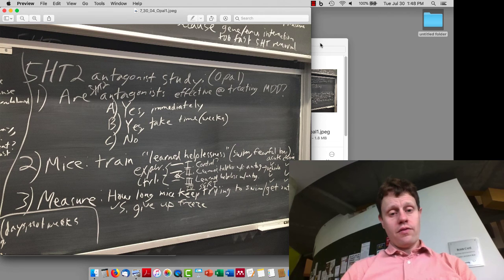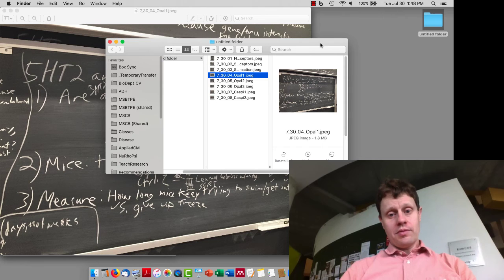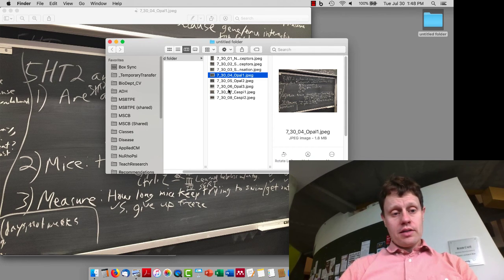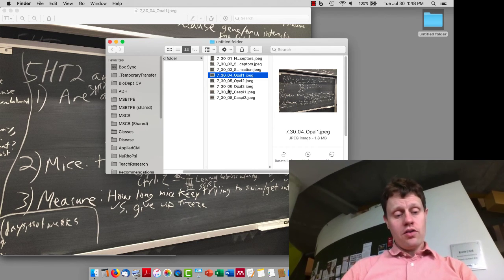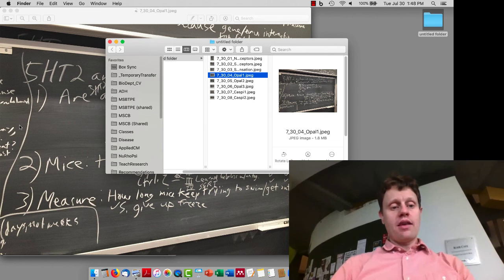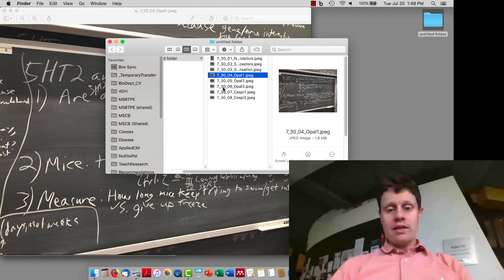What they found is that 5-HT2 antagonists, in a period of a few days rather than weeks, are able to improve symptoms of depression. This is something that is currently being worked on in human trials. There's a downside that they also lead to long-term drowsiness, however.